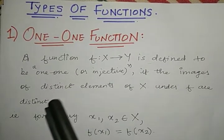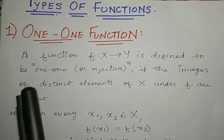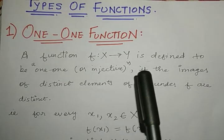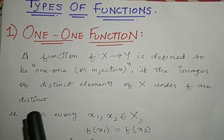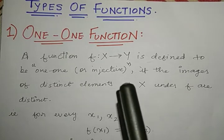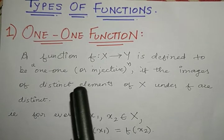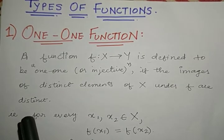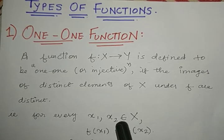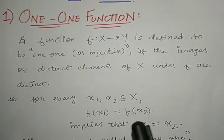Now what is a one-one function? A function f from x to y is defined to be one-one or injective if the images of distinct elements of x under f are distinct. That is, for every x1, x2 belonging to the set x, f(x1) equal to f(x2) implies that x1 is equal to x2.